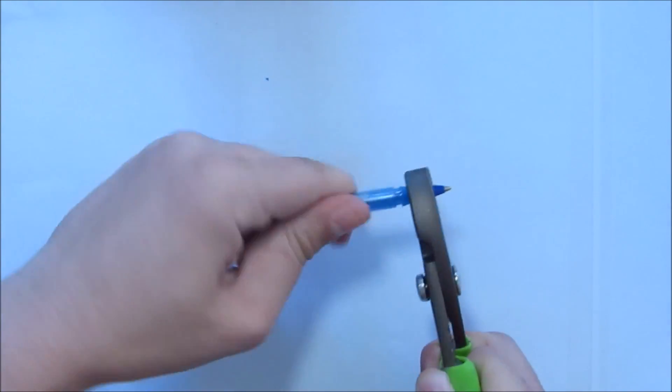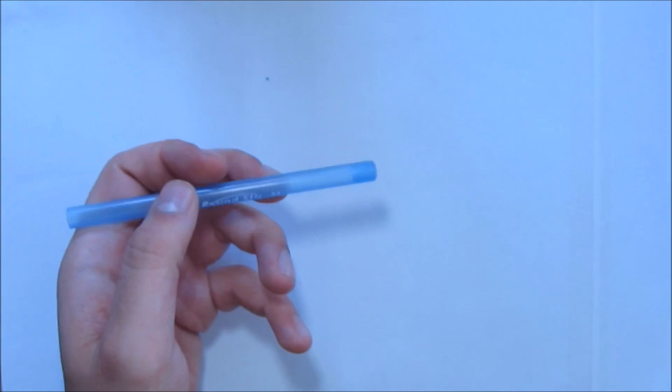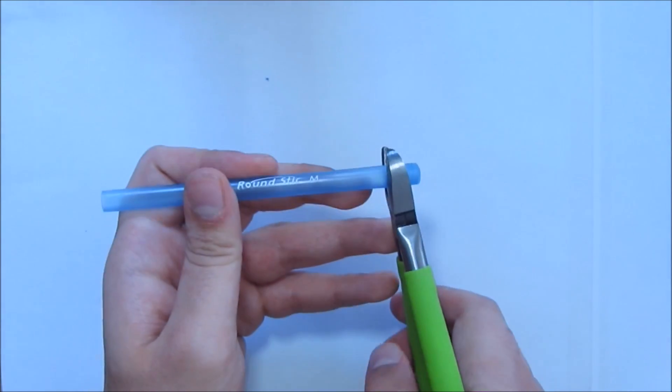First, take a pen and remove the inkwell. Then, shorten the casing by about three-quarters of an inch.